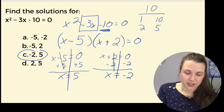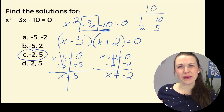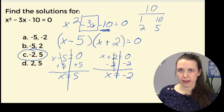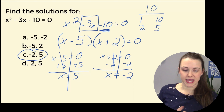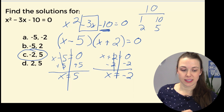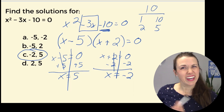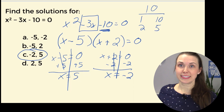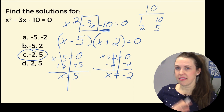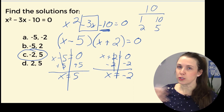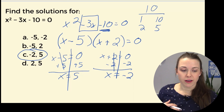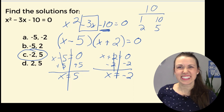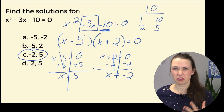Notice how my answer is really x = 5 and x = −2, and the answer choice says negative 2, five. Does that really matter? In some cases yes, but in this case no, because I just put the 5 before the 2 — it's not really a big deal. So in this case, it doesn't matter which one is listed first.